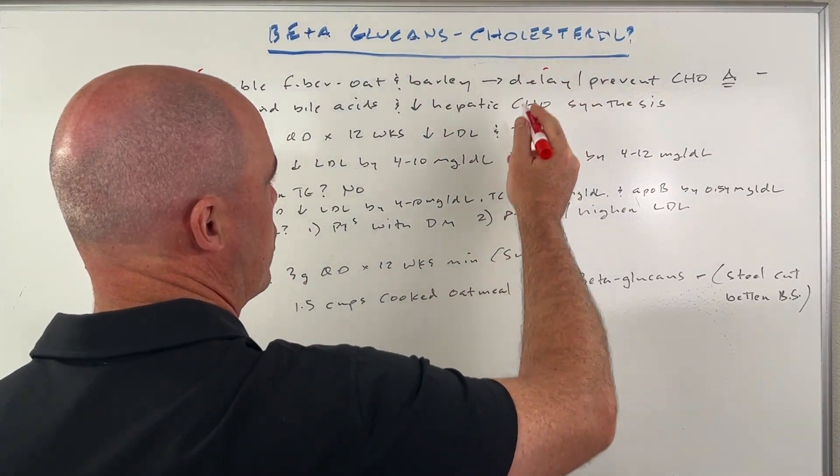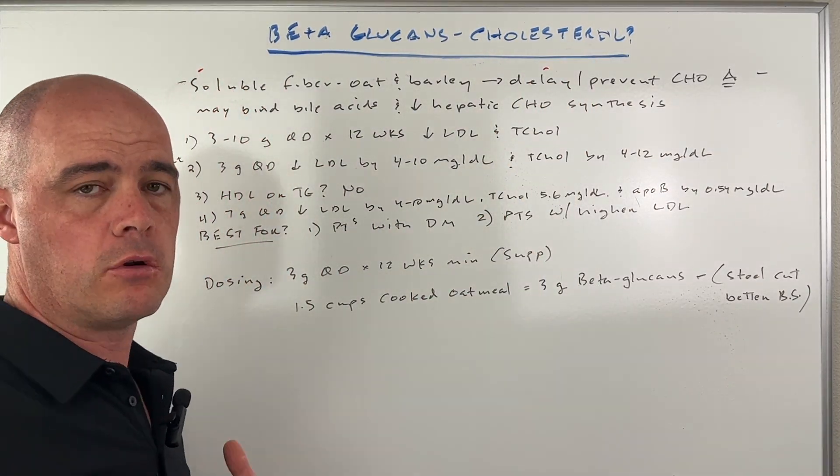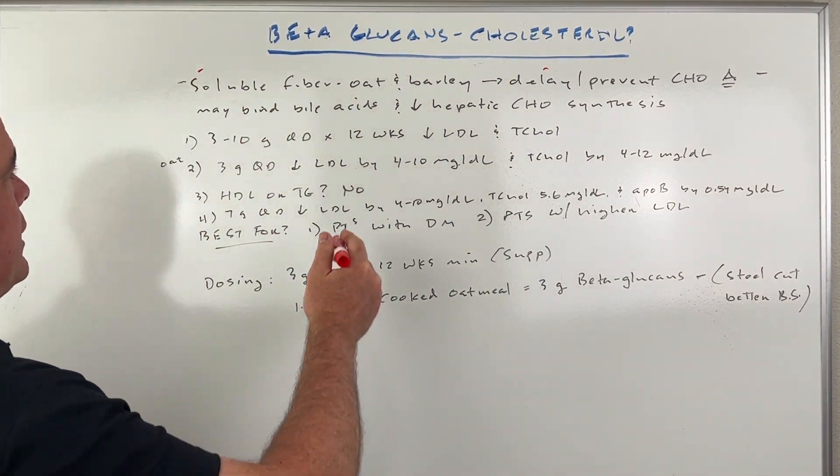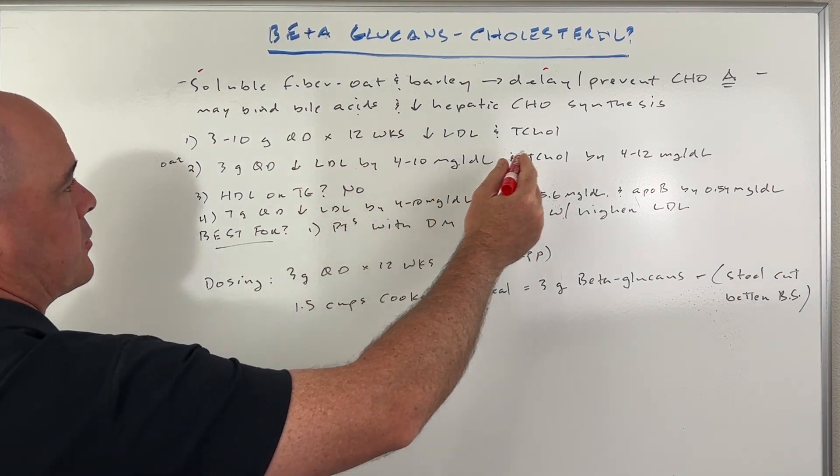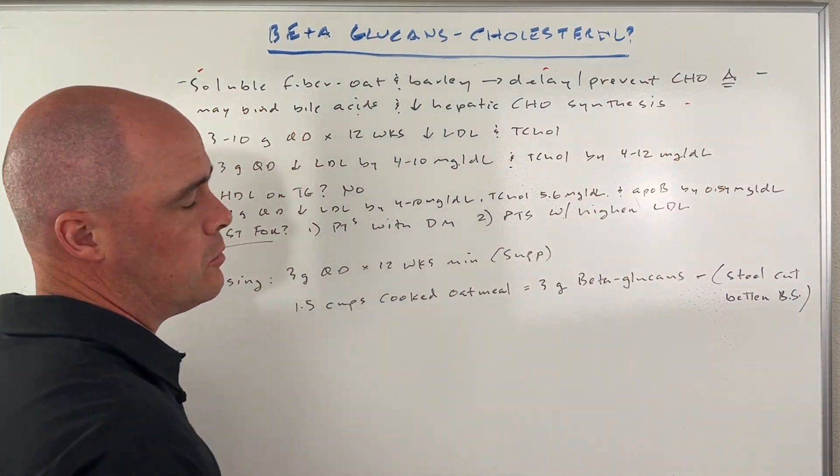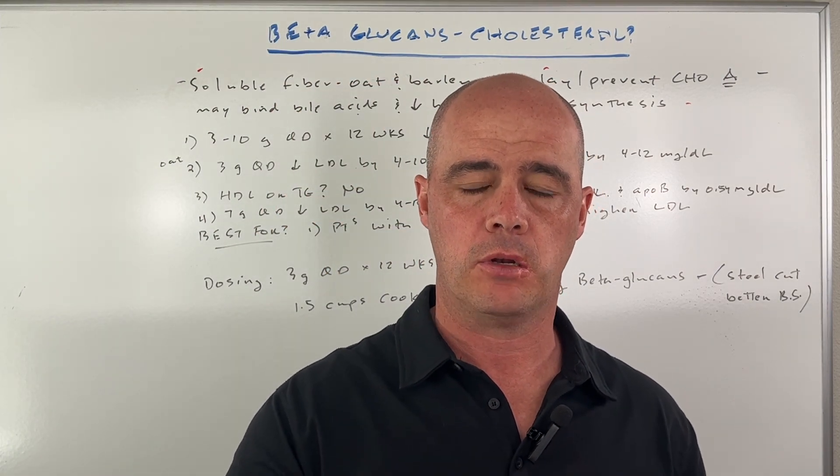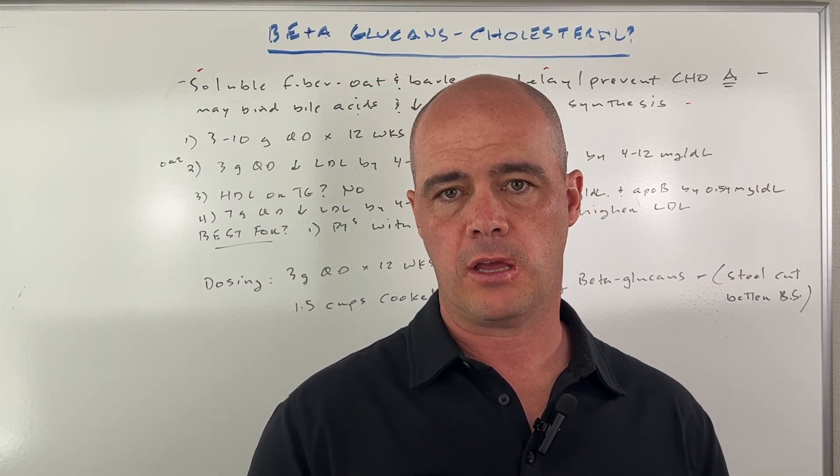What they're doing, what we know is that they delay or in some cases prevent the absorption of cholesterol in your body. They can bind to bile acids. And the other important thing is the cholesterol that your liver is making can go down when you take beta glucans.